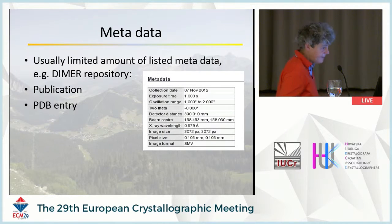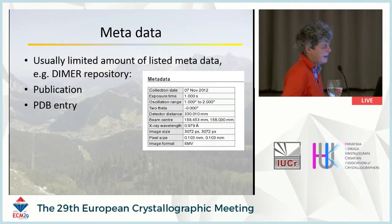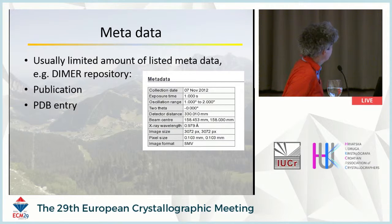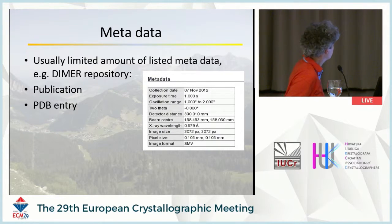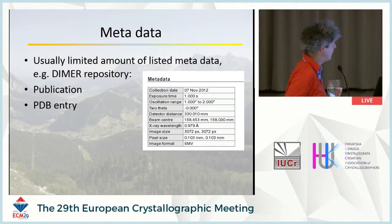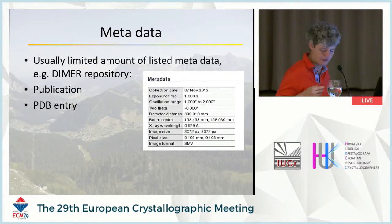Looking at the metadata that accompany those repositories, it is usually very limited — for instance in Daimer you have a small table that's supposed to tell you what the data are, and I doubt that is enough information. In a publication and PDB entry there is also metadata, and you can find a lot of information about the chemistry of the crystal.